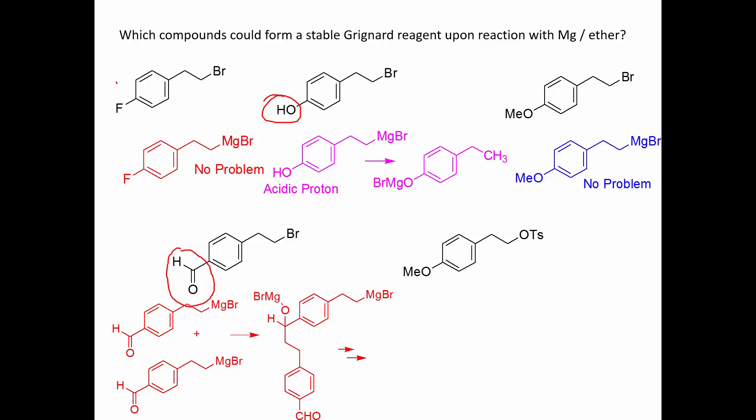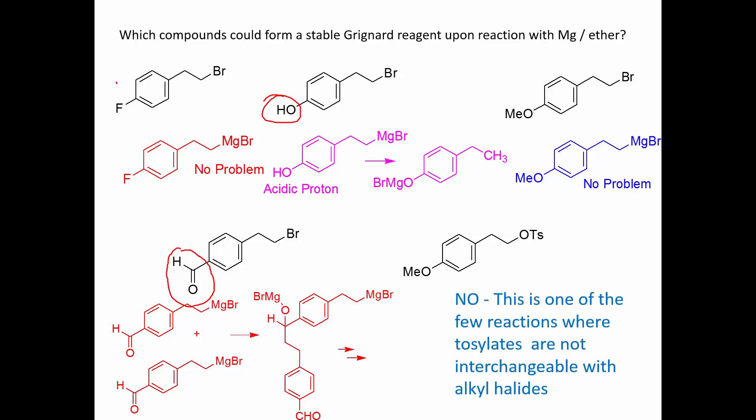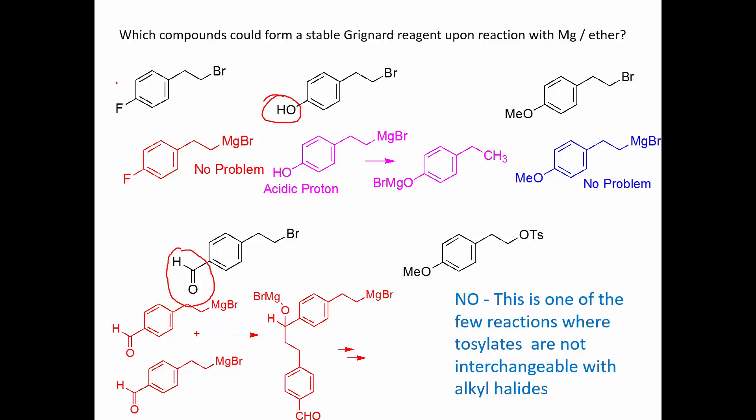And the last one — we're substituting a tosylate for a halide, which is something we commonly did in the first half of the course, but this is the one reaction where you cannot do that. Tosylates are not interchangeable with halides in the Grignard reaction.